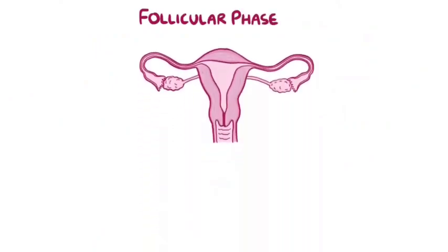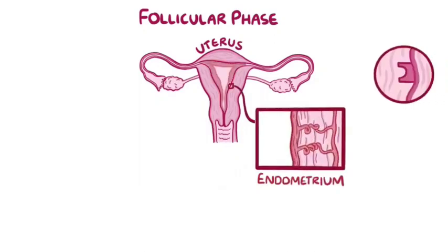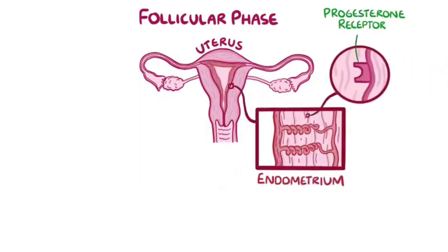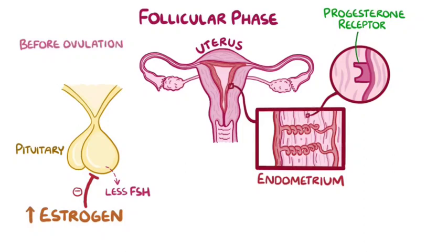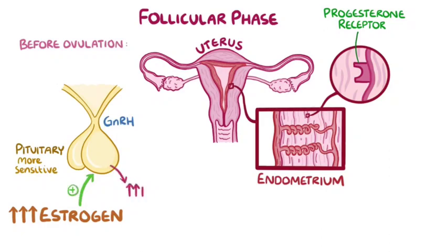During the follicular phase of the menstrual cycle, estrogen makes the superficial layer of the uterus, the endometrium, thicken up and sprout progesterone receptors. During the follicular phase, estrogen acts as a negative feedback signal, making the pituitary secrete less FSH as estrogen levels rise. Right before ovulation, the really high estrogen levels make the pituitary much more sensitive to the actions of hypothalamic GnRH, and so they turn into a positive feedback signal, leading to a massive surge of FSH and LH that leads to ovulation.